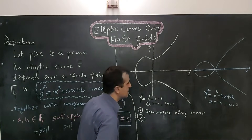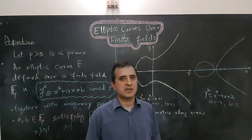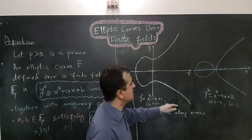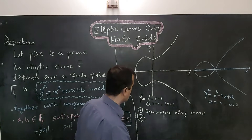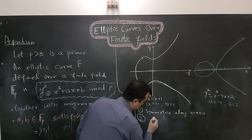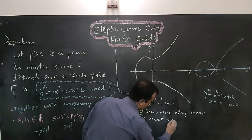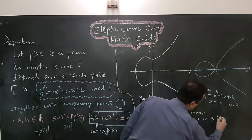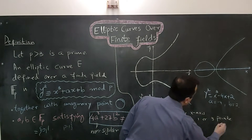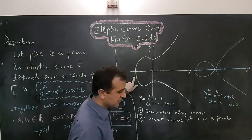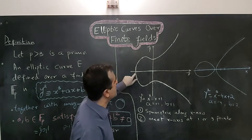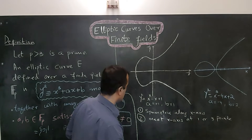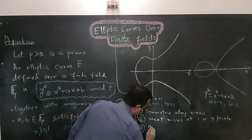An elliptic curve can either meet the x-axis at exactly one point or at most three points. Additionally, the curves are smooth — they have no vertices and tangents are defined at every point, confirming they are non-singular.